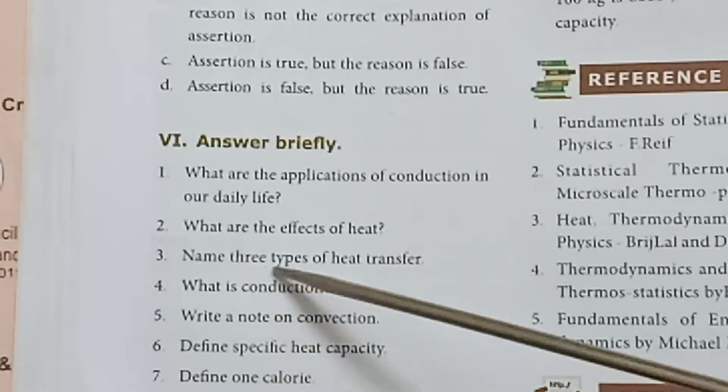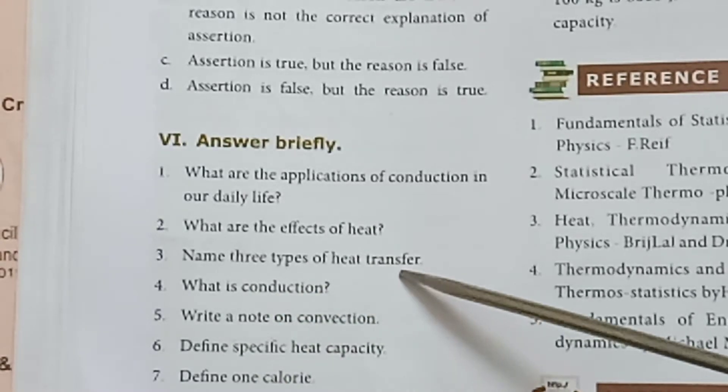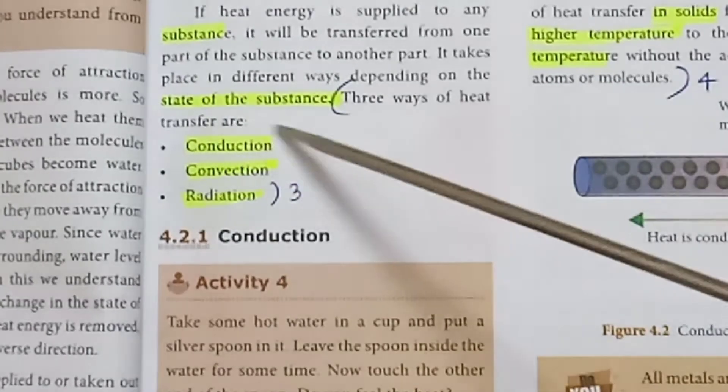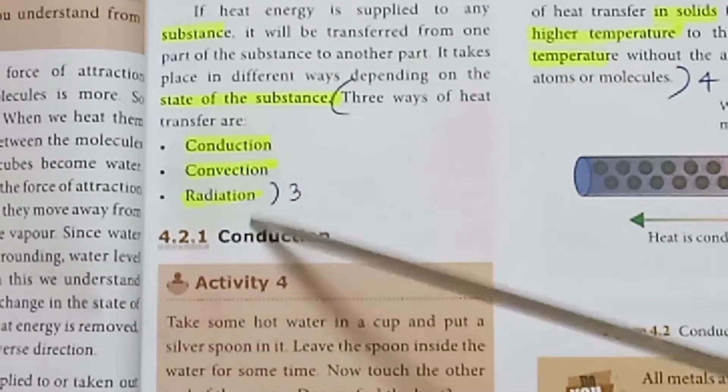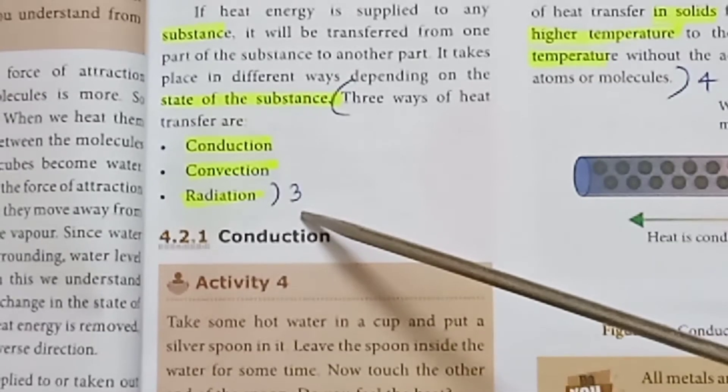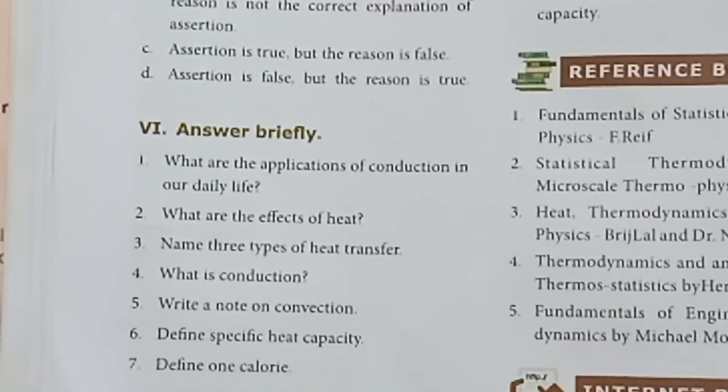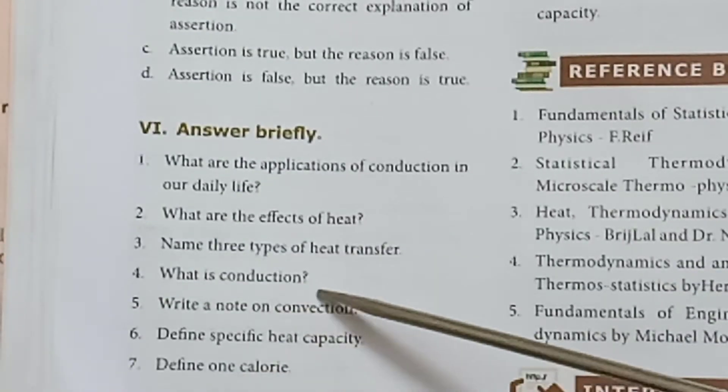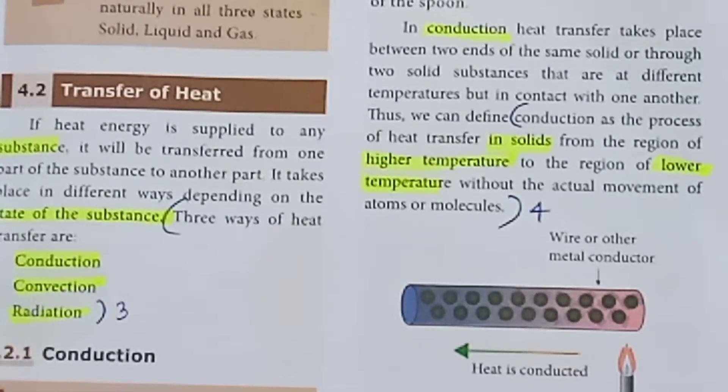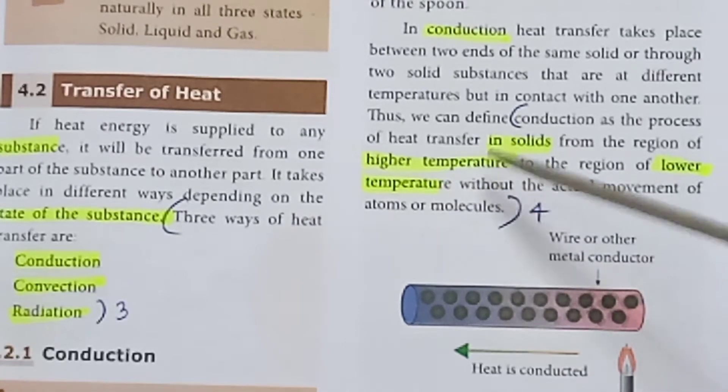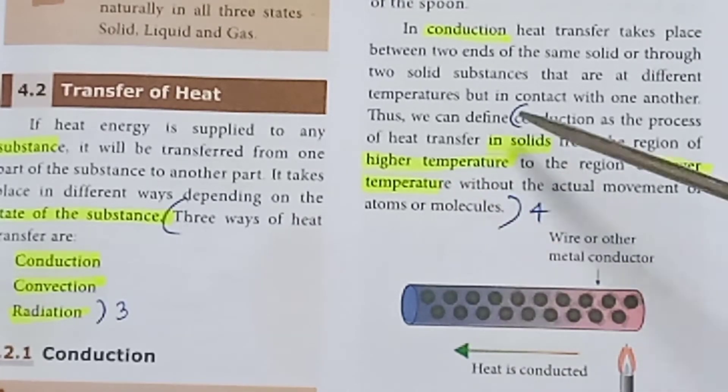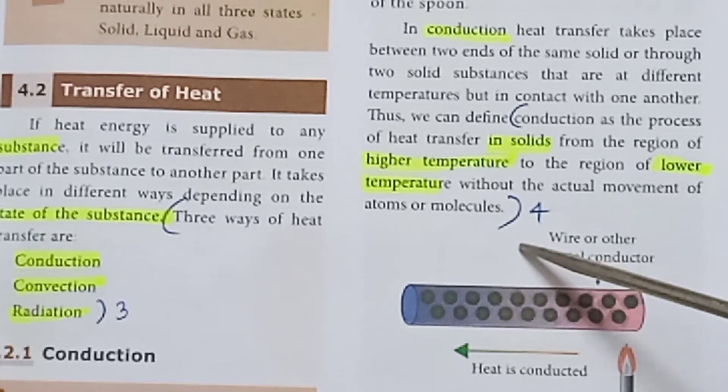Third one: Name three types of heat transfer. Page number 37: Three ways of heat transfer are conduction, convection, and radiation. Fourth one: What is conduction? Page number 37: Conduction is the process of heat transfer.